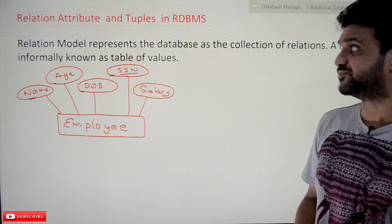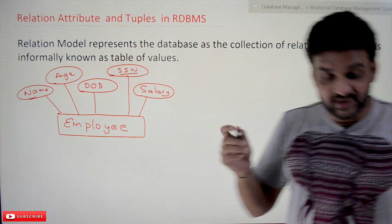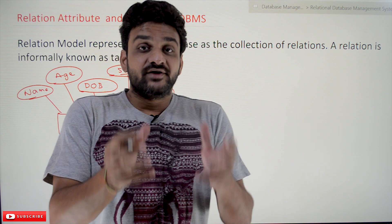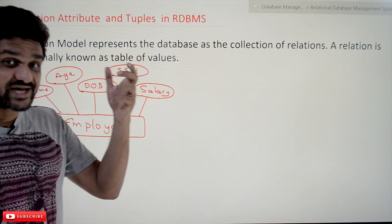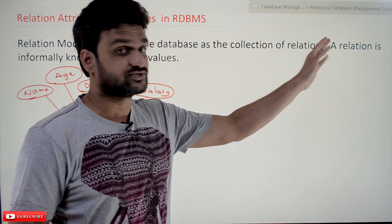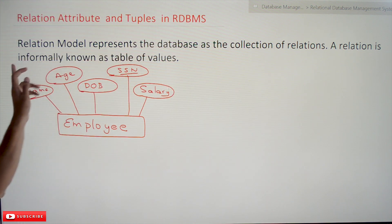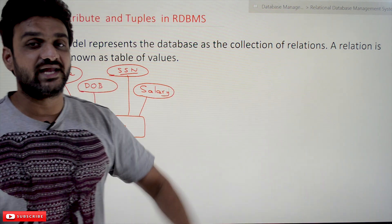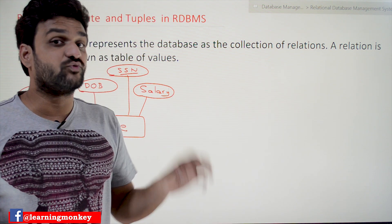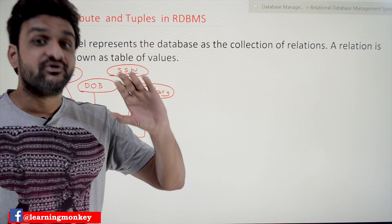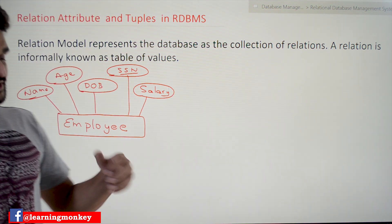Before understanding these terms in RDBMS, we'll try to understand what is a relational model. A relational model represents the database as a collection of relations. A relation is informally known as a table of values. In the relational model, a database is considered as a collection of relations.